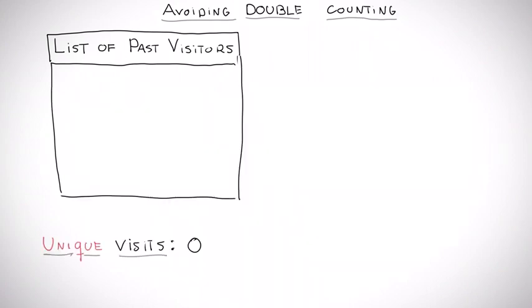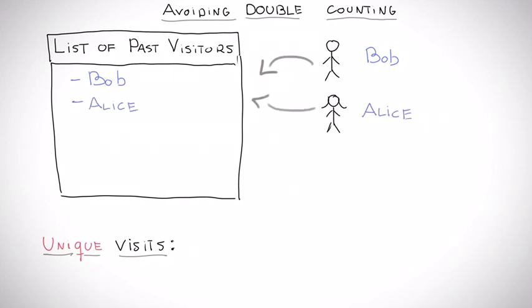Then, every time you get a new access, we first check if the name of the person is in the list. Only if we do not find the name there, we add the person to the list and increase the number of unique visitors.